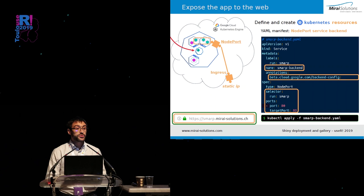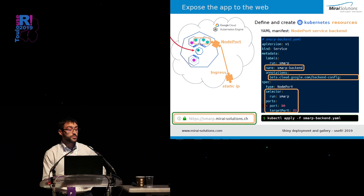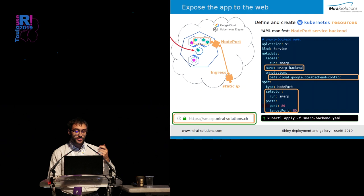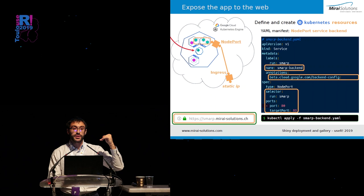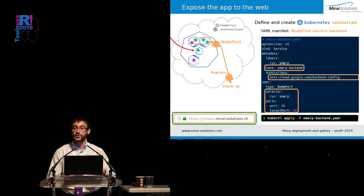In Kubernetes, you can define the specs of any resource using YAML manifests and create the resource using the kubectl apply -f command. Let's look at the details of the node port service backend we want to create. We give it a name — service backend — which is used for referencing the backend in other resources. At the very bottom, we are telling this node port service which pods we want to forward requests to — in this case, the pods running SMARP, specifically on port 80, which is the port on which we have exposed the app.